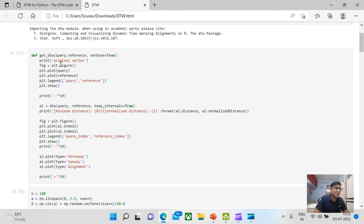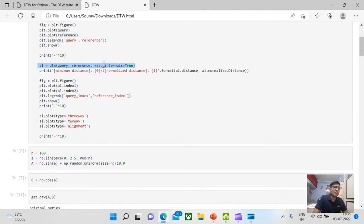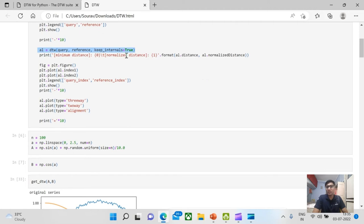The next is series b, which we are taking as the cosine of the above series, which appears as the orange line. Using these two series, we are writing just a custom function where we are displaying the plots. And DTW algorithm itself can work simply by calling the DTW method of the DTW library and passing the query reference. And internals, you can keep it as true or false. That's a choice that you can make.